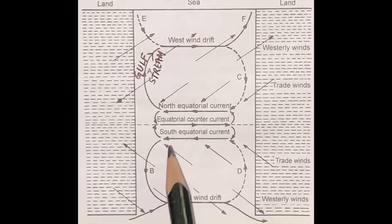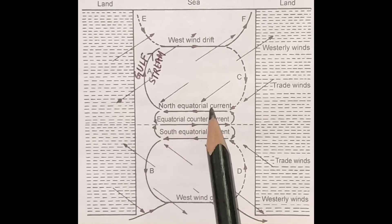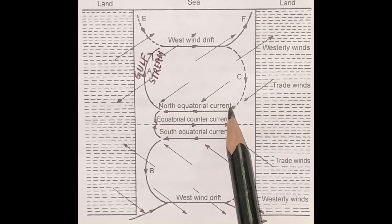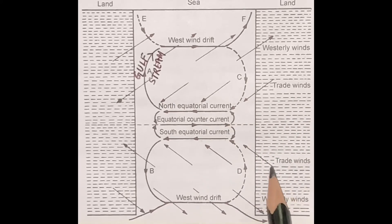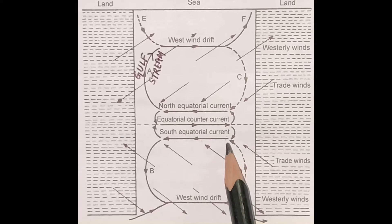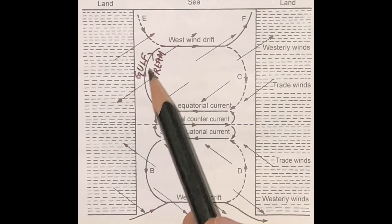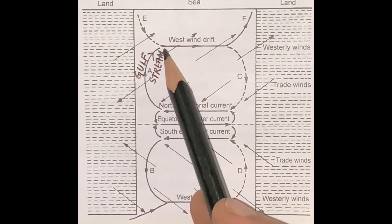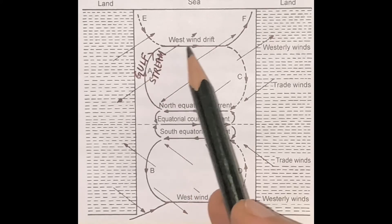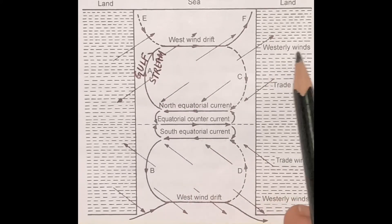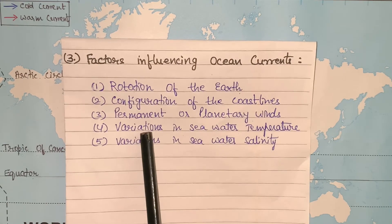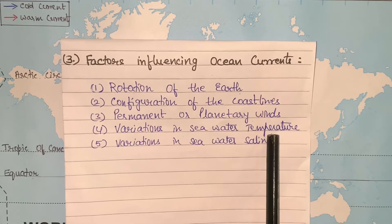You can see that the north equatorial and south equatorial currents are influenced by the northeast trade winds as well as by the southeast trade winds. In the same way, you can see that the Gulf Stream moves in a northeastern direction under the influence of westerly winds. The fourth factor is variations in seawater temperature.